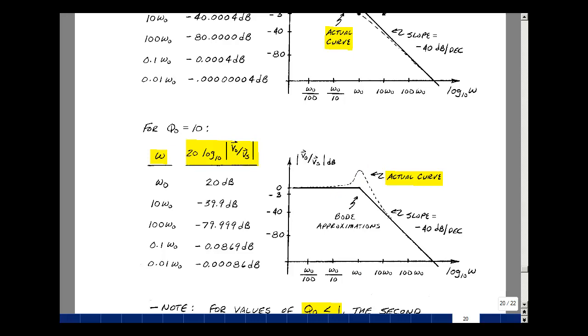For values of Q naught less than one, the second-order low-pass filter is very similar to the low-pass filter that was on page four of chapter six, but with double the high-frequency slope. When omega is greater than omega naught, for each decade increase in frequency, we drop by about 40 dB, or a factor of one over 100. So our signal gets smaller and smaller as the frequency goes up, and we get better filtering.